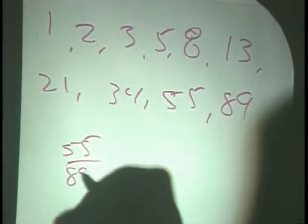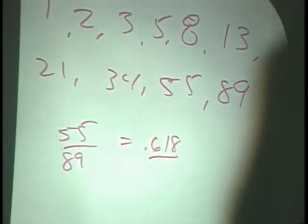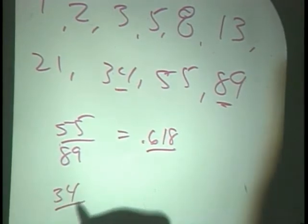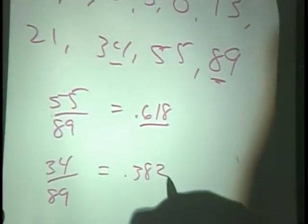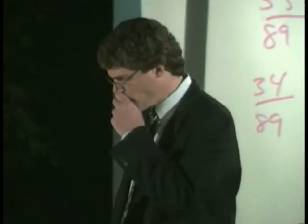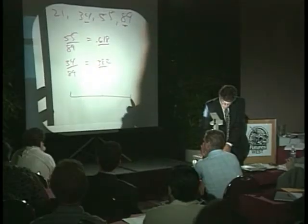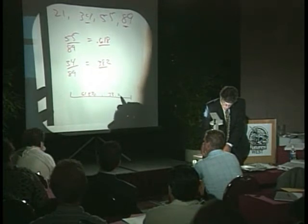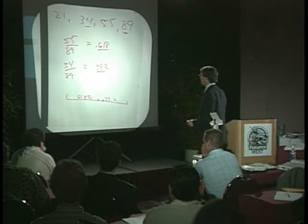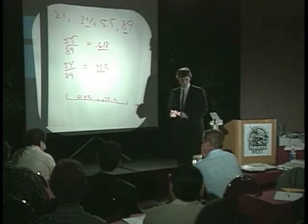For instance, 55 over 89 is 0.618. We take the alternates: 34 over 89 equals 0.382, and together those equal the whole, equal 1. So in its very simplest form, Fibonacci is basically the division of space into 61.8% and 38.2%. That's all it is. We're also going to look at something that Gann thought was very important, which was the 50% retracement.